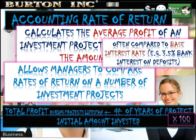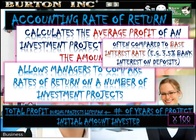The percentage that comes out is often compared to the base interest rate. For example, if you can earn 3.5% interest on cash in the bank, then we want to make sure that our investment returns significantly more than playing it safe and leaving our money in the bank.